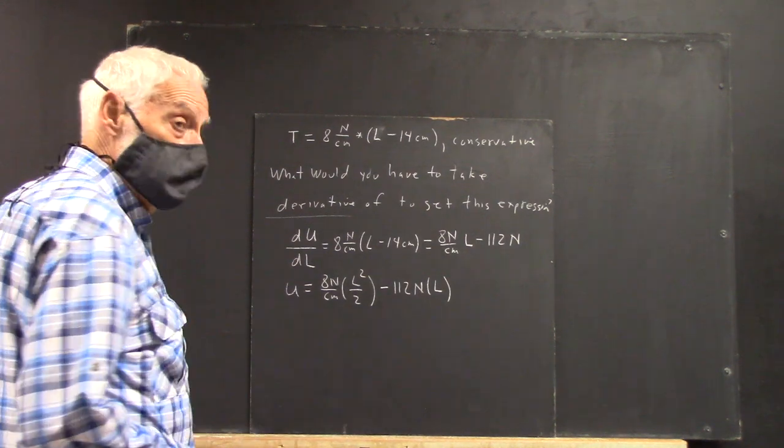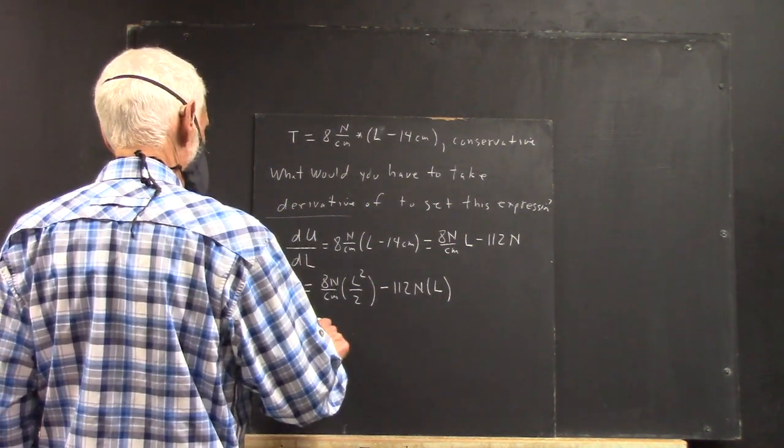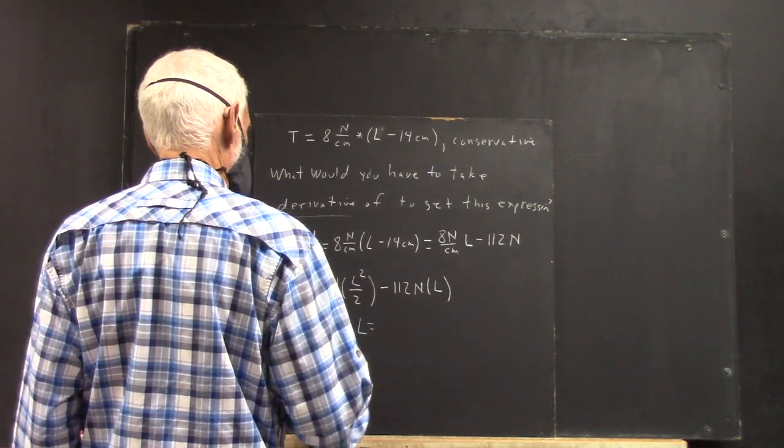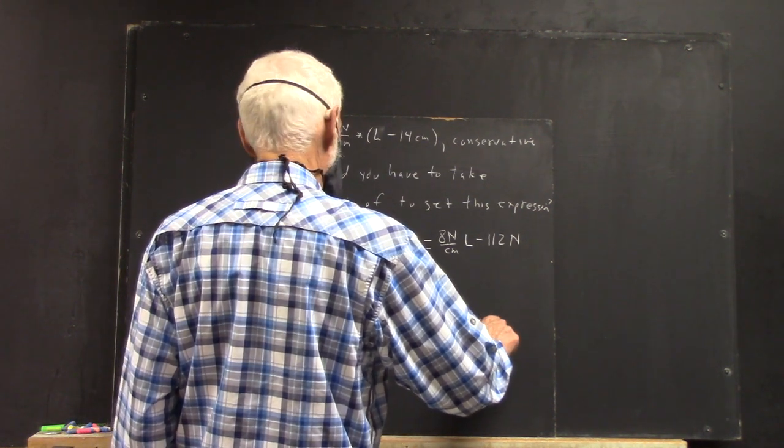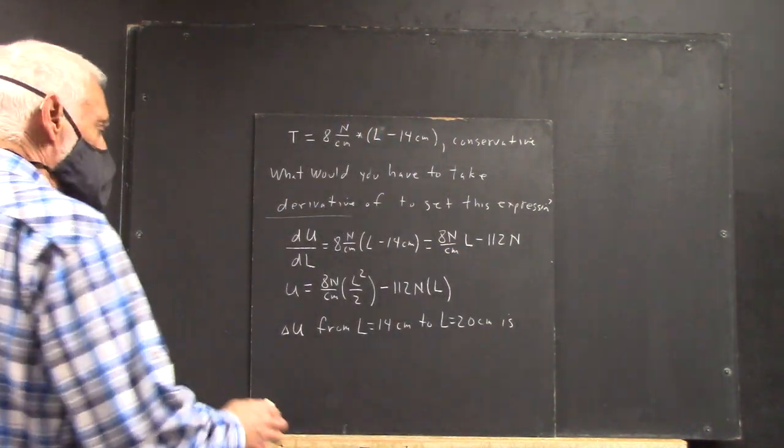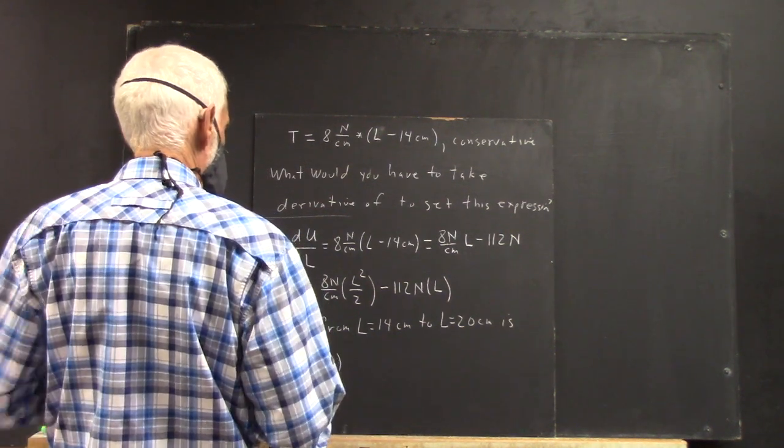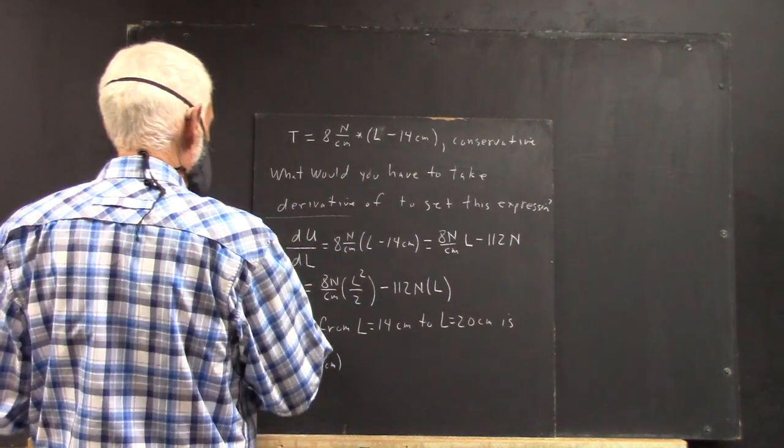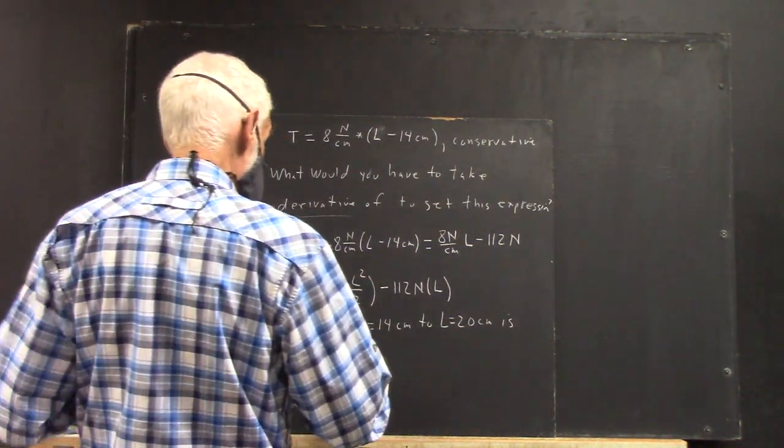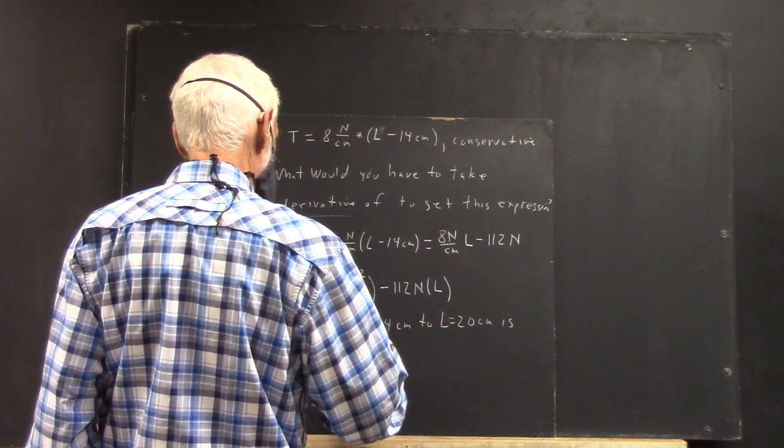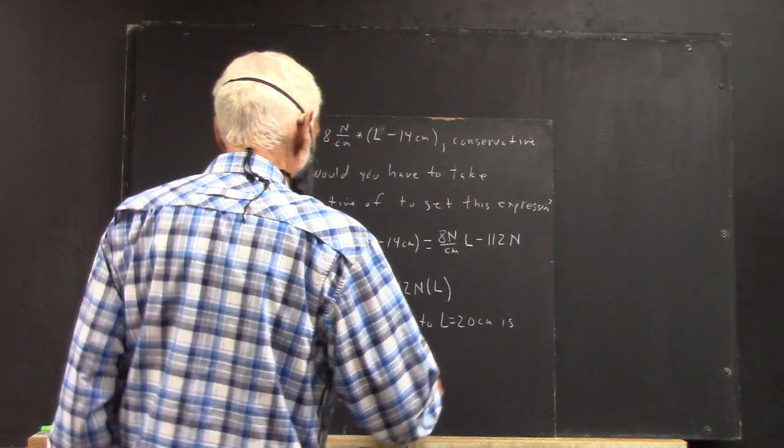There's the potential energy function. So, from L equals 14 to 20 centimeters, what's your change in U? Well, that's U of 14 centimeters using function notation. And let's just say, make sure we understand, this is U of L. Function notation, right? U of 14 centimeters.